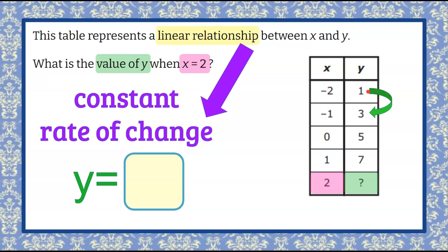Y increases from 1 to 3 - that's an increase of 2. X increases from negative 2 to negative 1 - that's an increase of 1. Negative 1 to 0 is an increase of 1, and 3 to 5 is an increase of 2. 0 to 1, increase of 1.